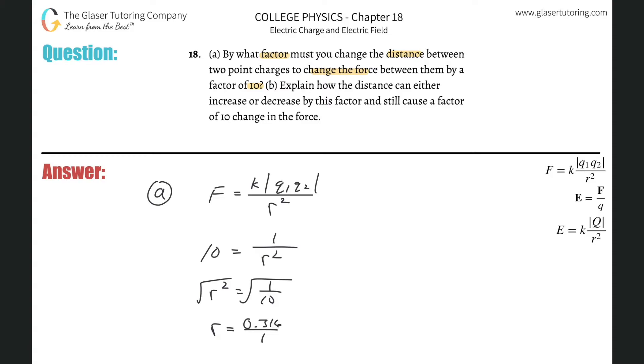So basically to increase the force by 10 times, we're going to have to manipulate the distance. Let me re-read the question. If I want to increase the force by 10, I'm going to have to reduce the distance between them to about 30%, or 0.316 of its original value.